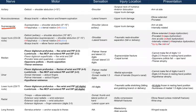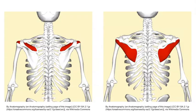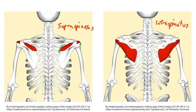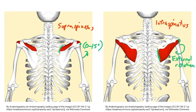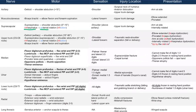Now let's talk about the suprascapular nerve. This innervates two important muscles: the supraspinatus muscle and the infraspinatus muscle. The supraspinatus muscle is responsible for shoulder abduction from 0 to 15 degrees. The infraspinatus extends from the scapula and attaches to the lateral side of the humerus — when it contracts, it pulls the humerus causing lateral rotation, called external rotation. To remember this, use the word infection: INF for infraspinatus, and action for external rotation.